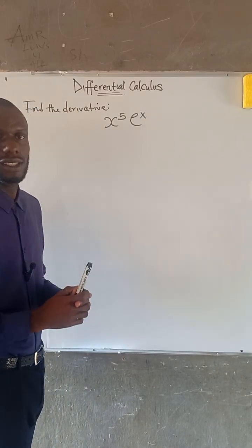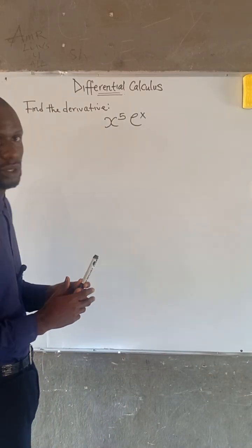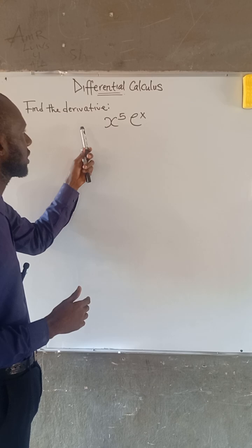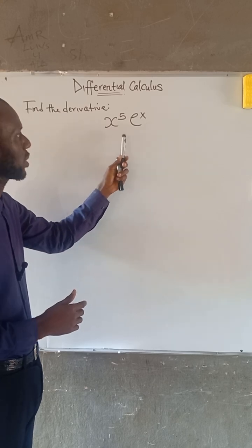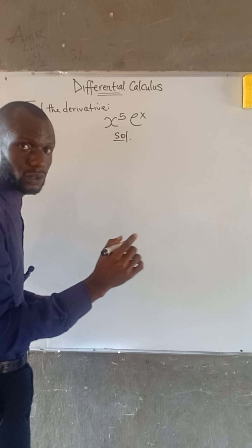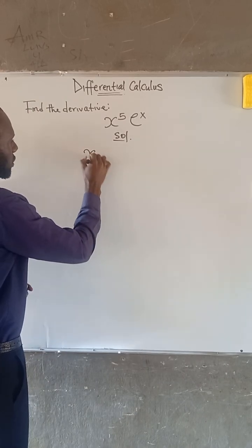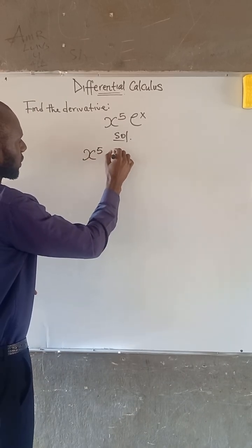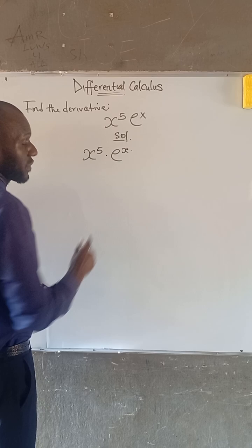In today's video, we will provide the solution for this question. We are asked to find the derivative of x to the power of 5 multiplied by e to the power of x.